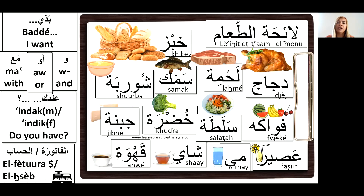'Fwakey' means fruit. 'Salata,' with the emphatic ta, is salad. 'Khudra,' with the emphatic da, literally means greenery because it comes from 'akhdar,' the color green — so 'khudra' means vegetables. 'Jibni' is cheese. 'Asir' with the emphatic 's' — like the 's' in 'sunshine' — means juice. 'May' is water; in standard Arabic it's 'ma,' but in Lebanese it's 'may.' 'Shai' is tea. 'Ahwe' is coffee — notice how we change the qaf in Lebanese to a glottal stop.